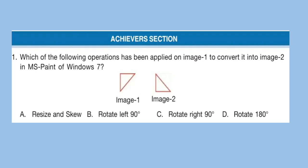Now here are some 5 questions for the achiever section. Question 1: Which of the following operations has been applied on image 1 to convert it into image 2 in MS Paint of Windows 7? Look at the images and try to find out your answer. The correct answer is option B — Rotate left 90 degrees.